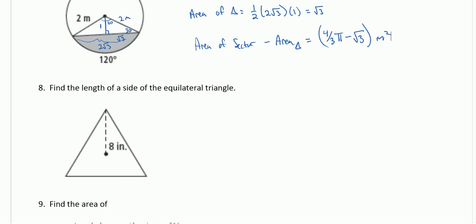Number 8, we have an equilateral triangle, so all sides are the same. The distance from the center to a vertex is 8 inches, and we want to find the side length. We've divided the center — 360 degrees — into three equal parts: 120 degrees each. Drawing the altitude gives a 30-60-90 with a hypotenuse of 8 inches. The shortest side — the apothem, or distance from center to midpoint — is 4. The side across from 60 is 4 root 3. So the full side length is double that: 8 root 3 inches.